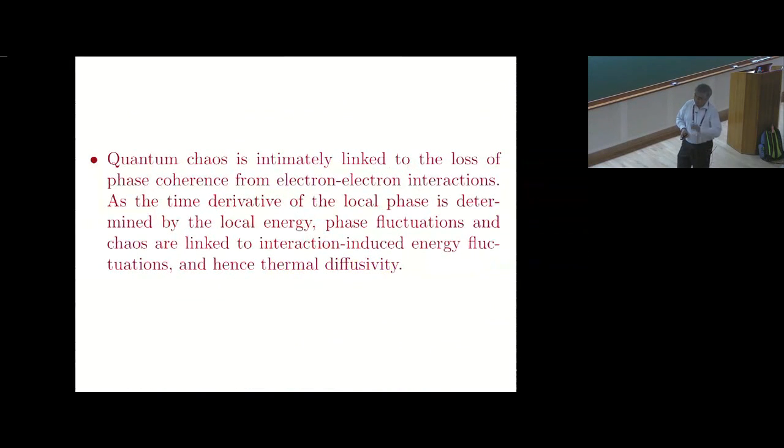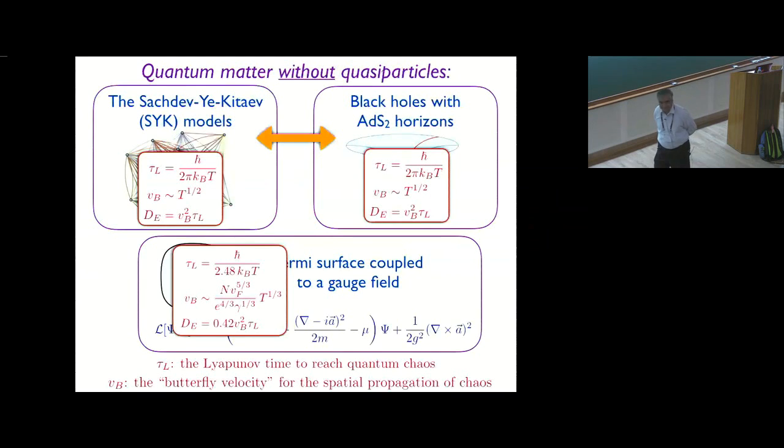So why would this connection be present? Here's my two cents worth of speculation. Quantum chaos has to do with propagation and loss of phase coherence. If you imagine you're defining some local phase, then Schrodinger equation tells you d phi dt is the local energy. So there's an intimate connection between energy fluctuation and local phase fluctuation, and therefore between chaos and thermal diffusivity. Let's see where we can take that idea, but it seems to work remarkably well in all these three models. Thank you very much.